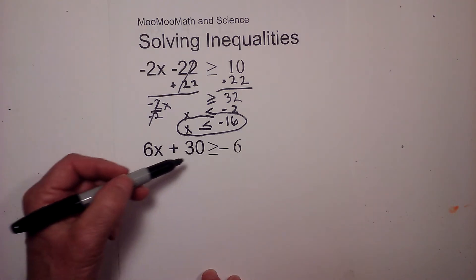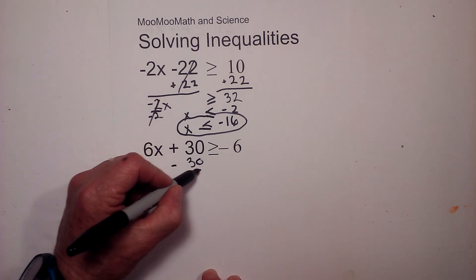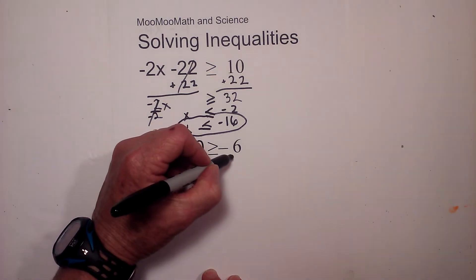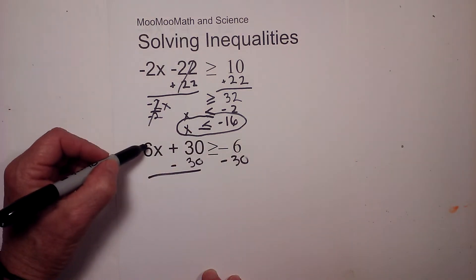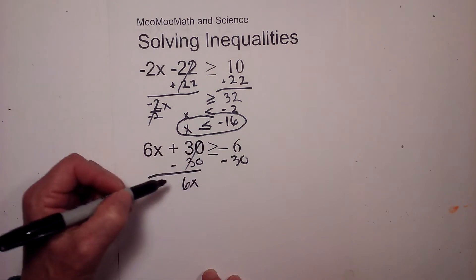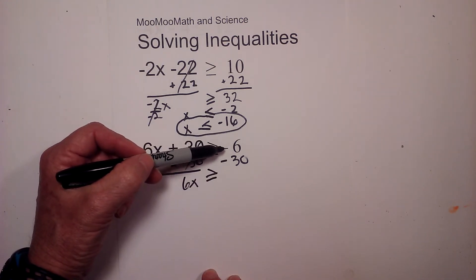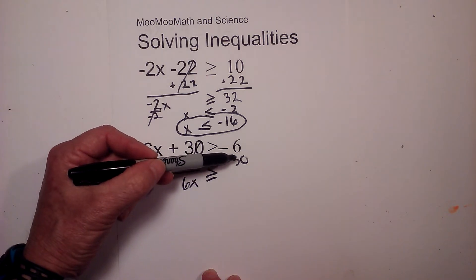Let's work another example. On this, I'm going to begin by subtracting 30 from each side, minus 30. And these cancel, I'll bring down the 6x, it's greater than or equal to. Now we have a negative 6 minus 30.